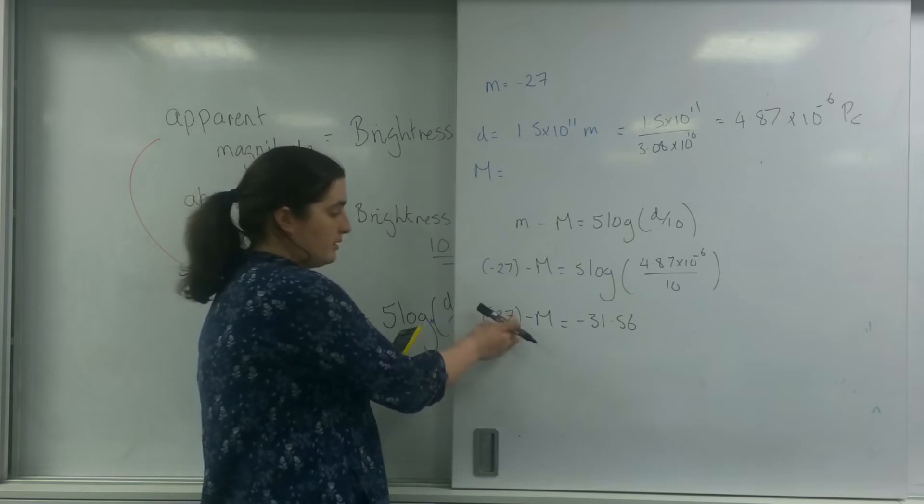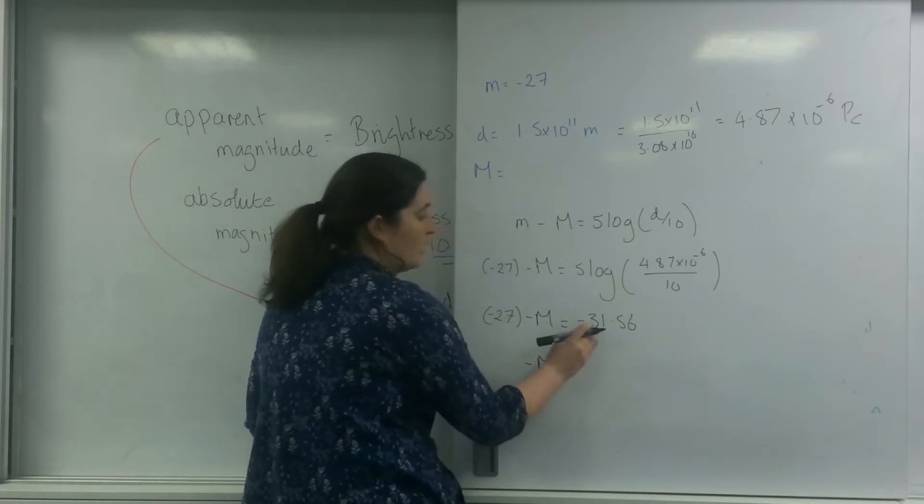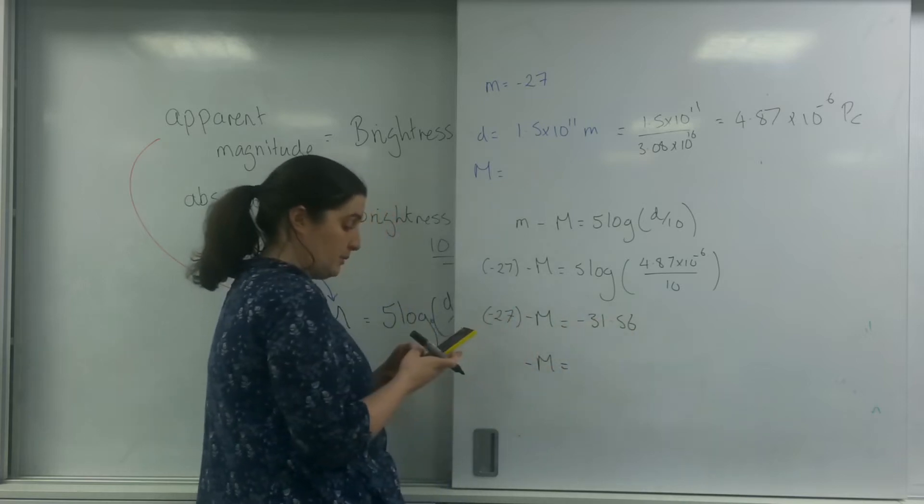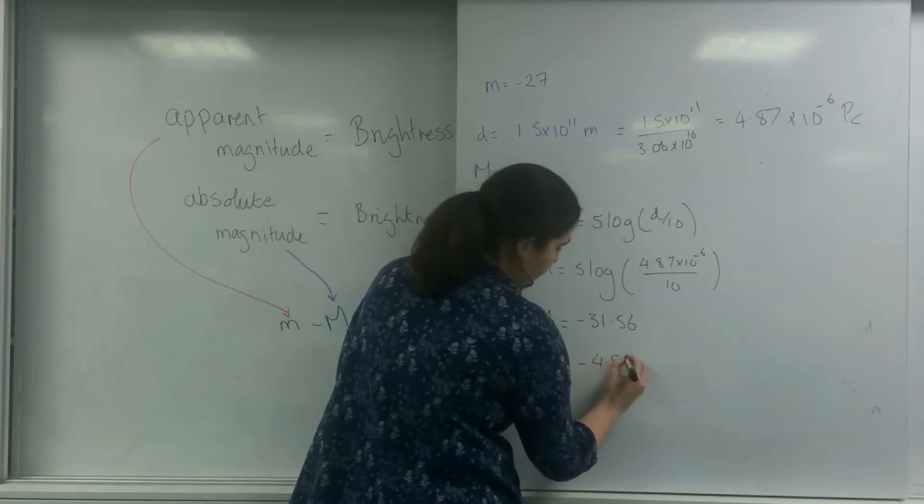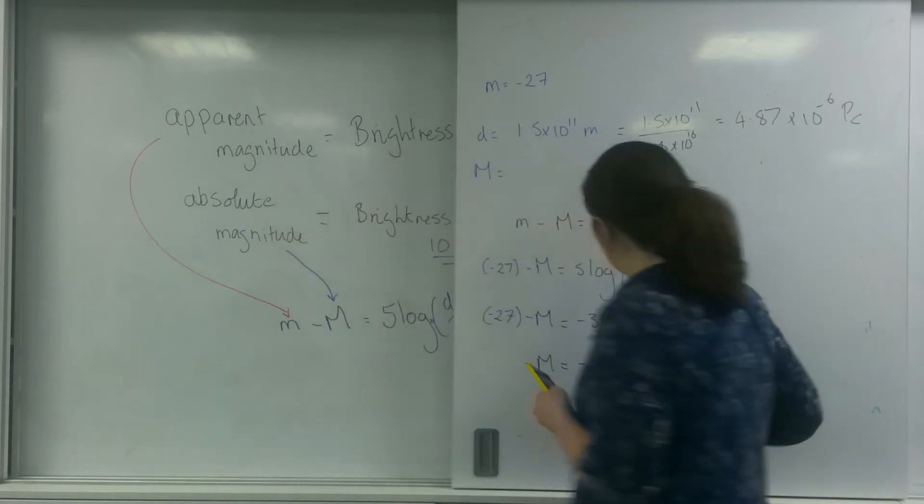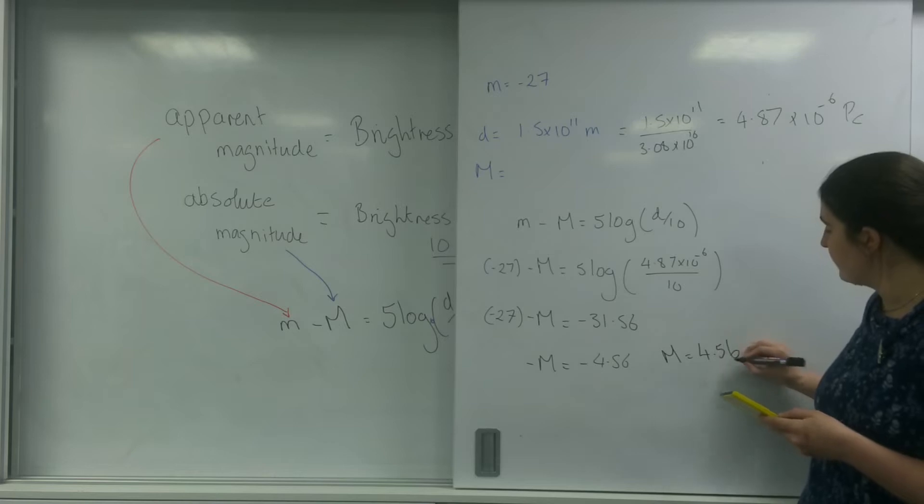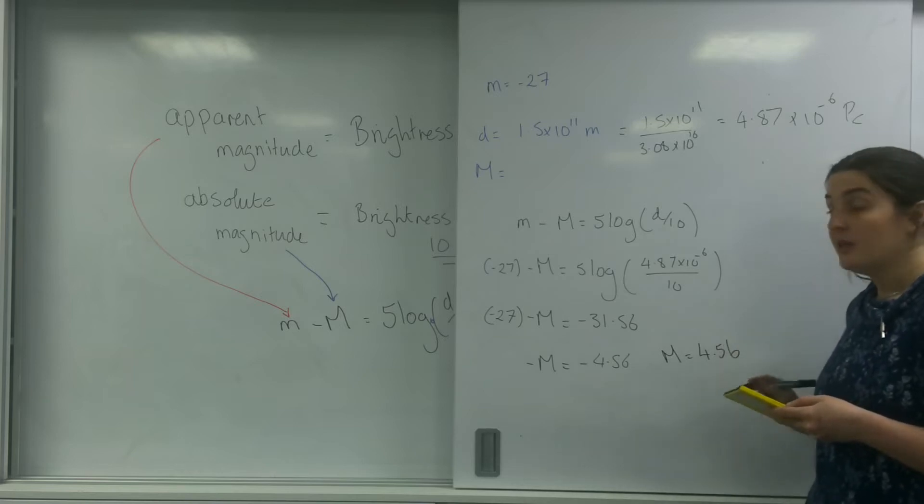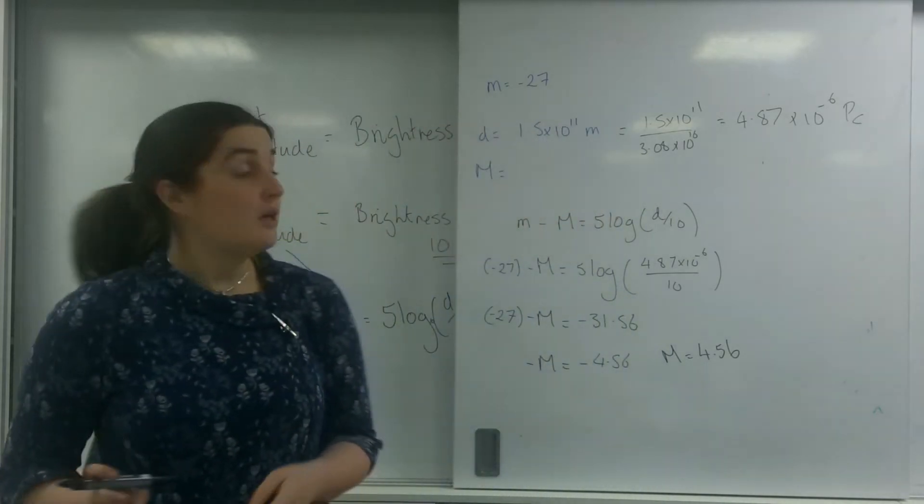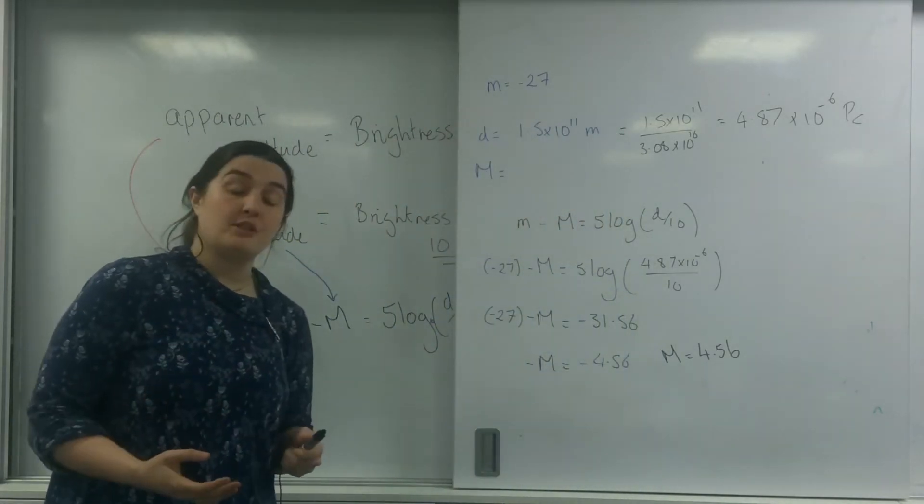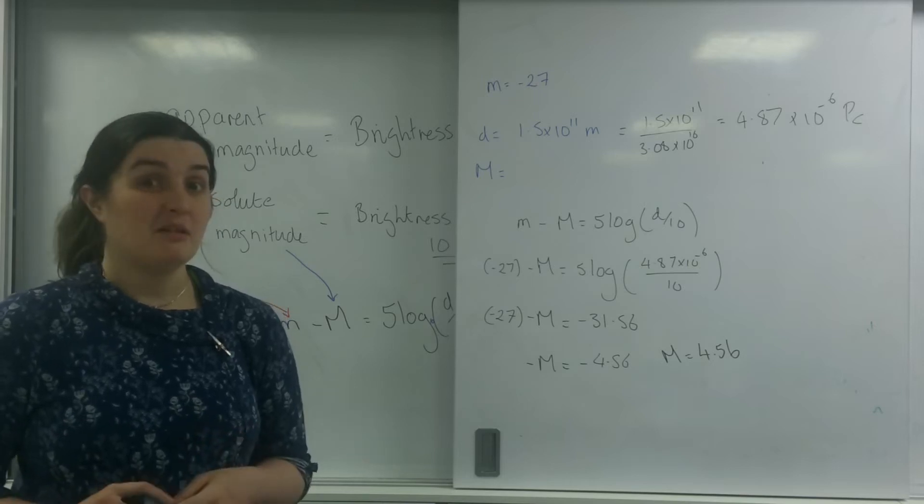So I've got a minus. So I'm going to take it to this side. I'm going to add it. So I've got minus M equals minus 31.56 plus 27 minus 4.56, which means that M equals 4.56 positive. So it's actually quite dim in the grand scheme of things. So our star has an absolute magnitude of 4.56. That is pretty dim.